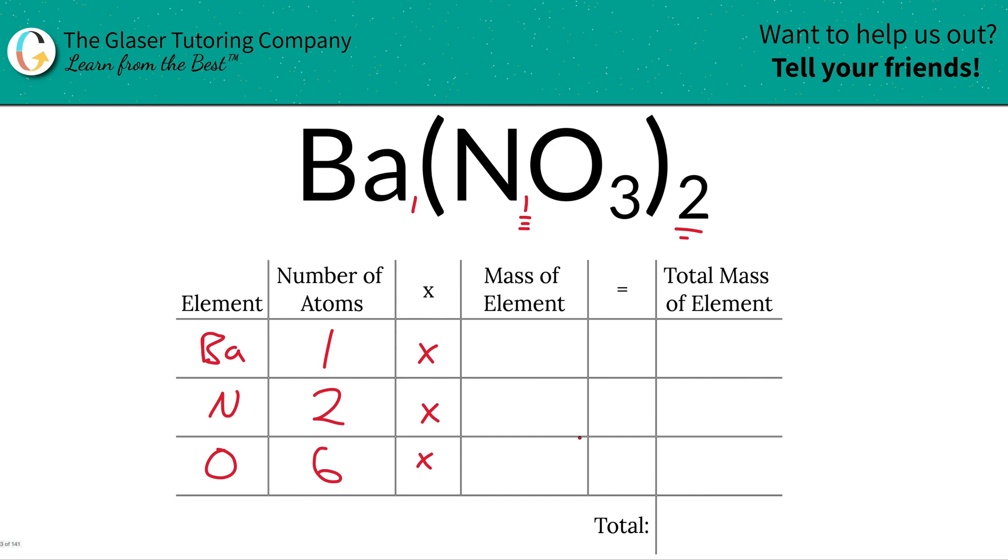So we're going to do barium here. Barium has a value of about 137, 137.33. Nitrogen is going to be about 14.01, and then oxygen was 16, right? 16.